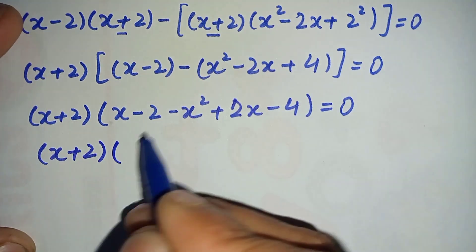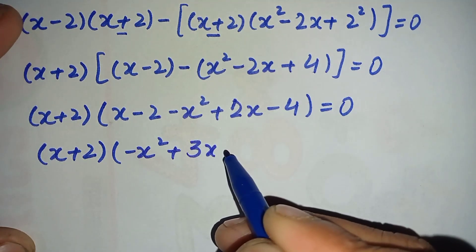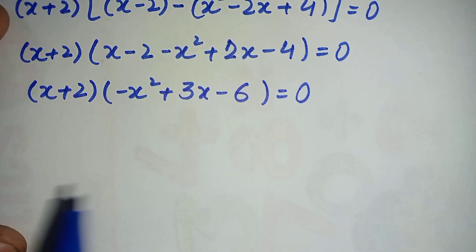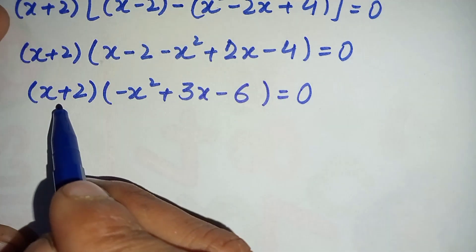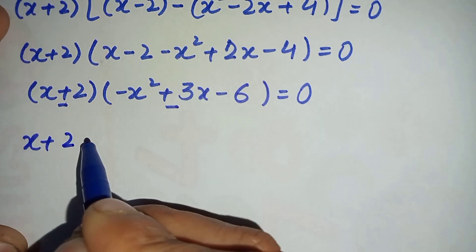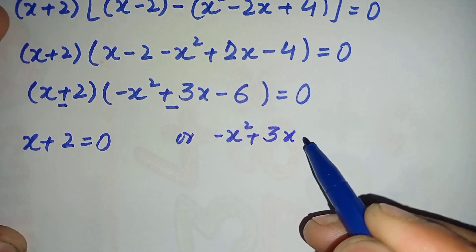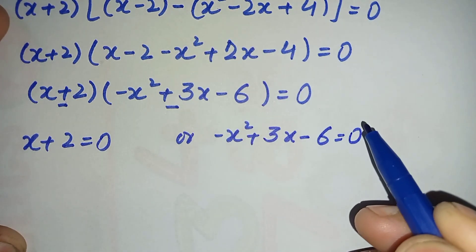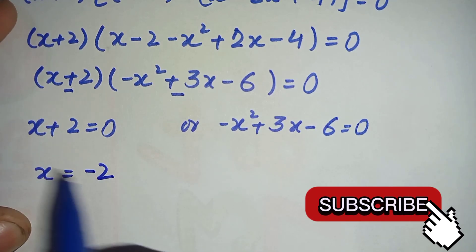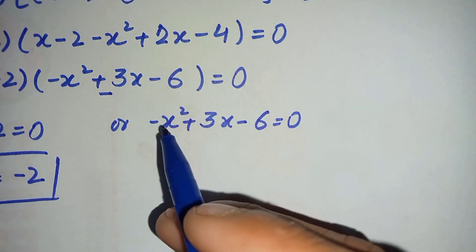Simplifying inside the parenthesis: x plus 2x is 3x, minus 2 minus 4 is minus 6, giving (x plus 2)(minus x squared plus 3x minus 6) equal to zero. Either x plus 2 equals zero, giving our first real solution x₁ equals minus 2, or the quadratic factor equals zero.